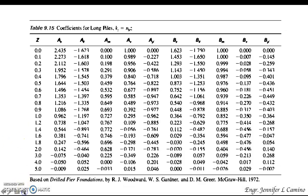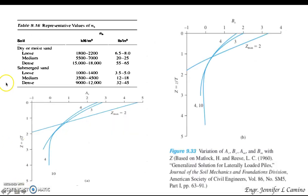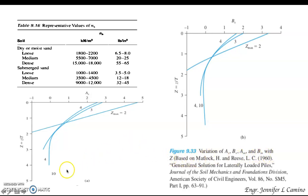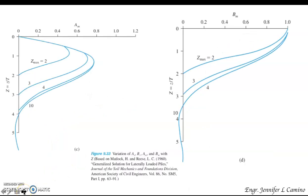This table shows the values of n_H with the type of cell and its corresponding value. This figure shows the variation of the coefficients a_b, b_b, a_m, a_x, b_x, a_m, and b_m with respect to Z.